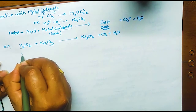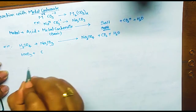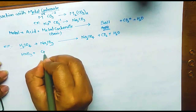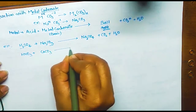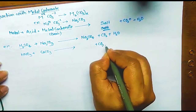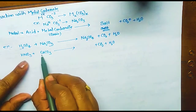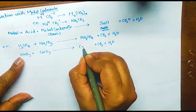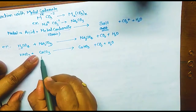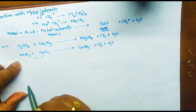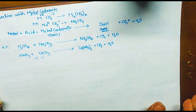Another example: HNO3 reacting with calcium carbonate CaCO3 — calcium is plus 2 and carbonate is minus 2. The fixed products are CO2 and water. Calcium and NO3 are left; Ca is plus 2 and NO3 is minus 1, so the salt formed is Ca(NO3)2.